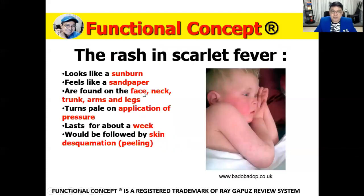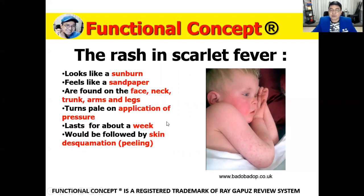The rash in scarlet fever begins on the face — and notice there's a whitish area around the lips, which we call circumoral pallor — then it affects the trunk, then the arms and the legs. It looks like a sunburn, feels like sandpaper, and is found on the face, neck, trunk, arms, and legs. It turns pale when you apply pressure. The rash lasts about a week, followed by peeling, or medically known as desquamation.